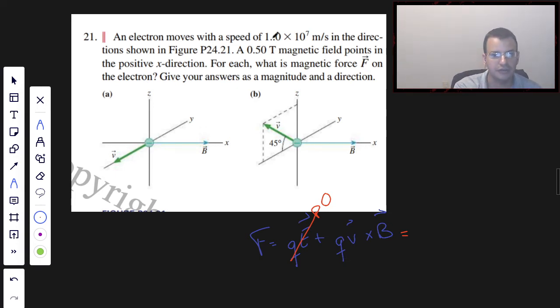...the charge of an electron. And then we're doing v cross B. So the magnitude of this, the magnitude of F, is going to be qvB, because a cross product is a measure of how perpendicular two vectors are.